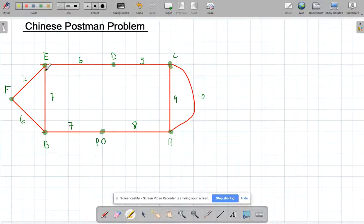We're going to look at the Chinese postman problem here. This is a problem where a postman needs to set out from the post office, which I've got here, and he's got to walk along every single edge. He's going to do it in the shortest possible way.